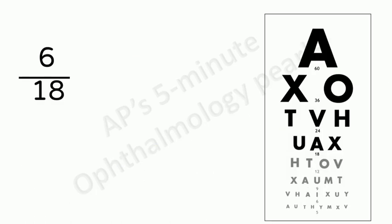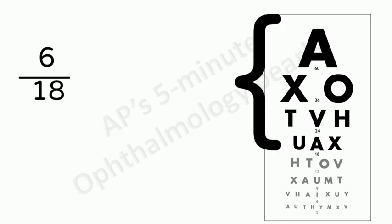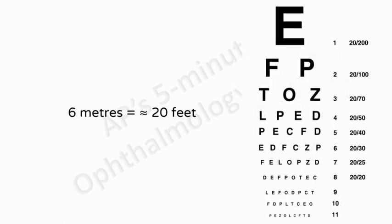The Snellen vision is recorded as a fraction. The numerator indicates the distance between the chart and the patient and the denominator indicates the distance from which a normal person can read that particular line. So, if a person reads only the first four lines of the Snellen chart, his vision is recorded as 6 by 18 and it means that a normal person can read the fourth line of the Snellen chart from a distance of 18 meters but this patient can read the same line from only 6 meters.